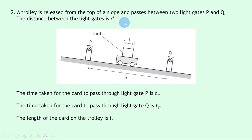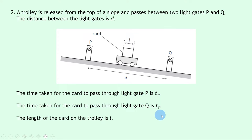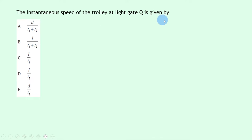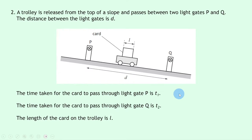Question 2 says a trolley is released from the top of a slope and passes between two light gates P and Q. The distance between the light gates is d. The time taken for the card to pass through light gate P is t1, and through light gate Q is t2. The length of the card on the trolley is l. The instantaneous speed of the trolley at light gate Q is given by which expression?